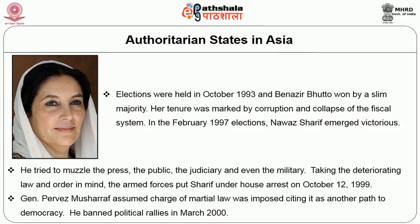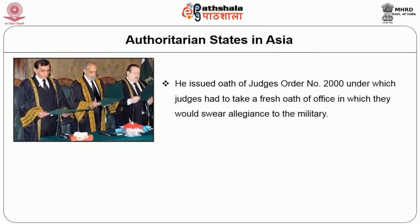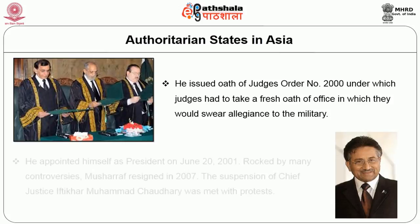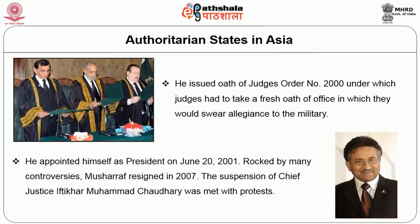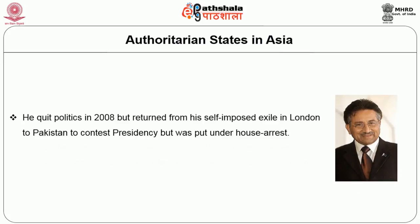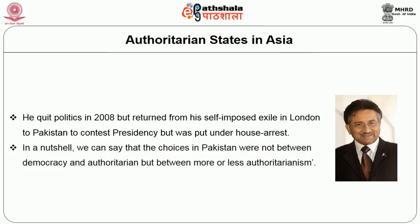Musharraf banned political rallies in March 2000 and issued the Oath of Judges Order 2000, under which judges had to swear allegiance to the military. He appointed himself President on June 20, 2001. Rocked by controversies, Musharraf resigned in 2007; the suspension of Chief Justice Mohammad Chaudhry was met with protests. He quit politics in 2008 but returned from self-imposed exile in London to contest the presidency, only to be placed under house arrest. In a nutshell, Pakistan's choices were not between democracy and authoritarianism, but between more or less authoritarianism.